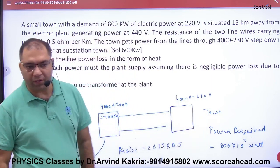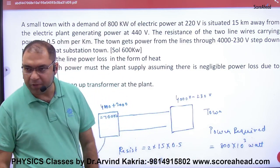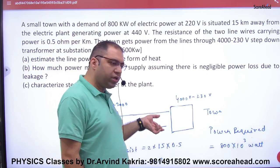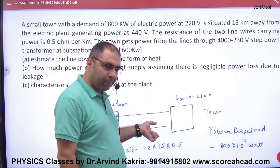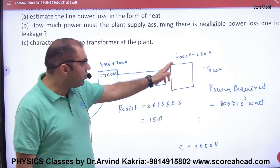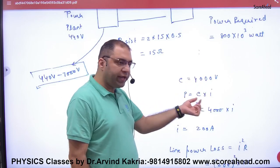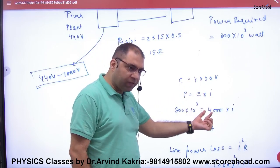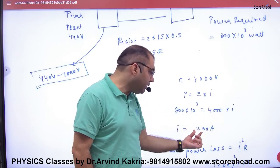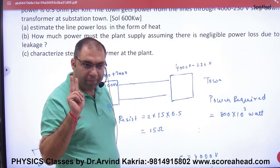Output power is 800 into 10 power 3, input power is 800 into 10 power 3. So current is 200 ampere here.